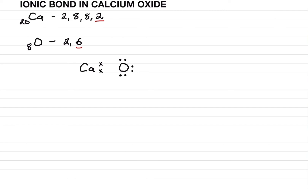We show the transfer of electrons by drawing arrows — these two electrons will go to oxygen. Then we make a square bracket, put calcium inside, close the bracket and write 2+. Why 2+? Because calcium has given two electrons, and now its electronic configuration becomes 2, 8, 8.